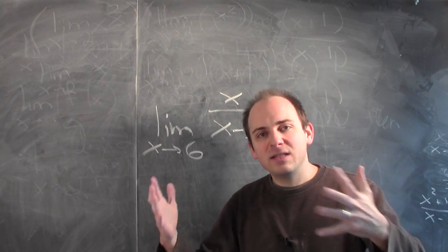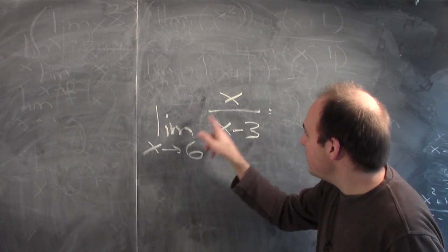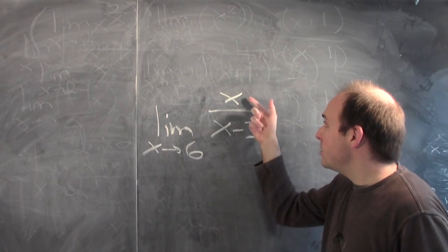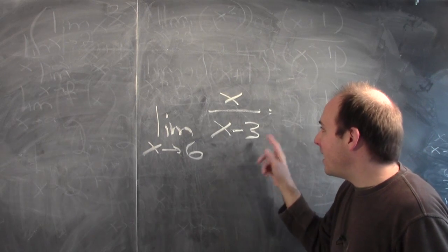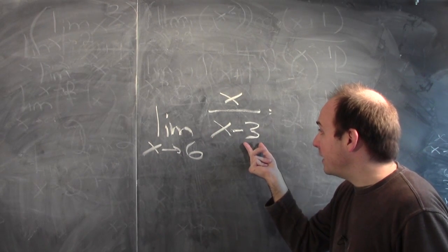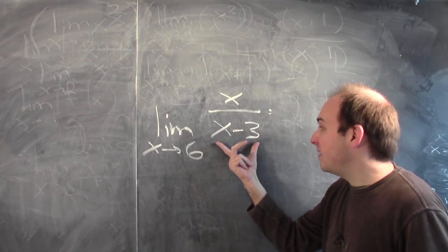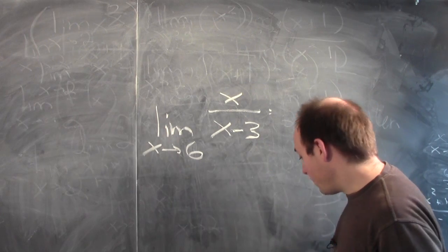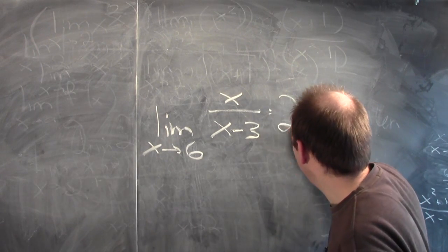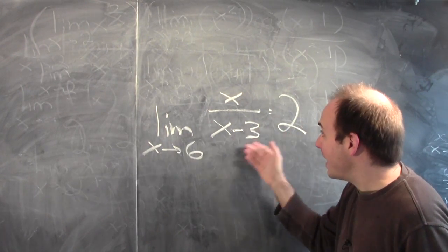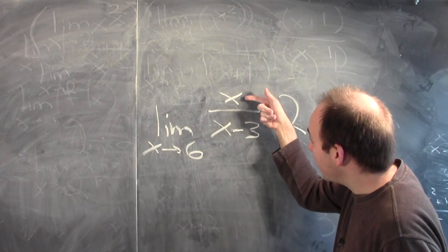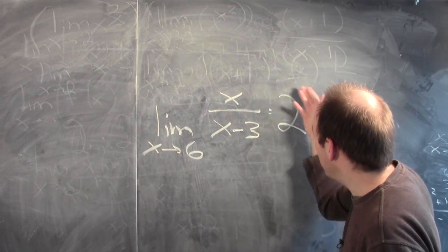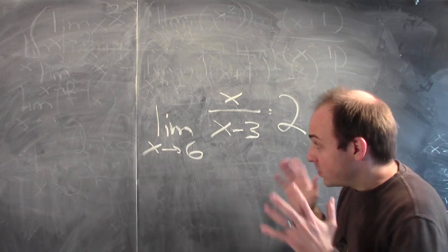Let's unpack this with an example. Consider the limit of x over x minus 3 as x approaches 6. This is no problem: the numerator is a number close to 6, and the denominator is a number close to 6 minus 3, which is close to 3. A number close to 6 divided by a number close to 3 is a number close to 2. And indeed, this limit equals 2 — I can make the numerator as close to 6 as needed and the denominator as close to 3 as needed to guarantee the ratio is as close to 2 as you like.